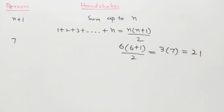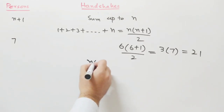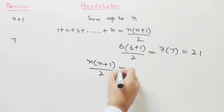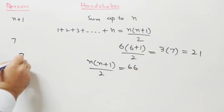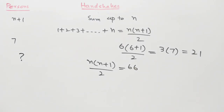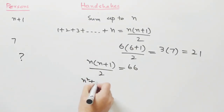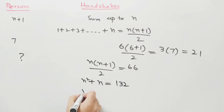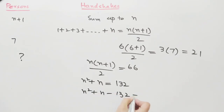Now we are coming to our question. In our question, we have sixty-six handshakes. So n times (n plus one) divided by two is equal to sixty-six, and we have to find n. We can write n squared plus n is equal to one hundred thirty-two, then n squared plus n minus one hundred thirty-two, which is a quadratic equation.